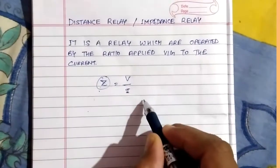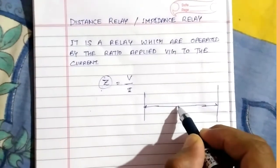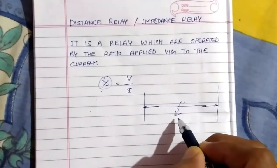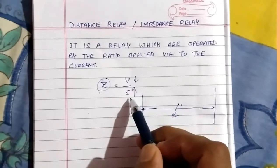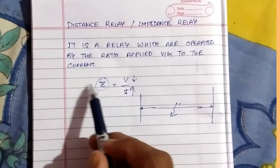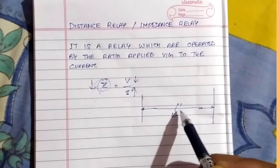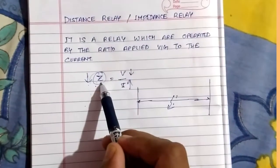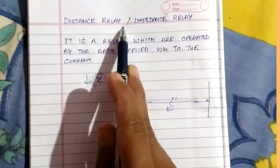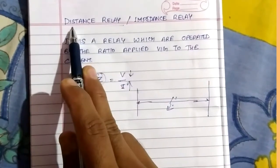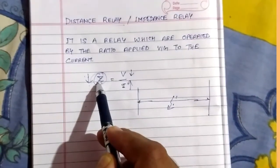In a long transmission line, if a fault occurs, the value of current is increased and the voltage is decreased, so the impedance value is also decreased. Due to this fault, the impedance is changed. If the impedance value changes, the preset value in the distance relay is also changed, and it will activate the tripping mechanism.